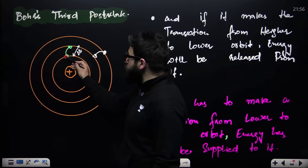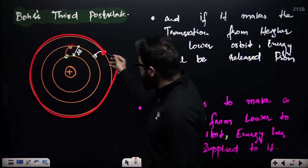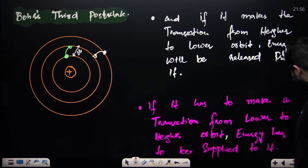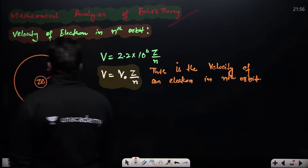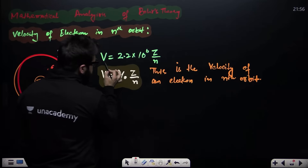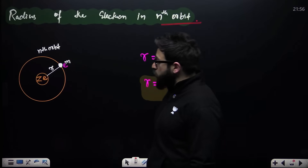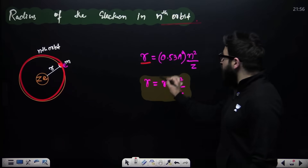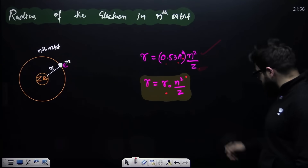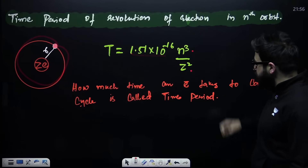Bohr's third postulate: if an electron transitions from a lower orbit to a higher orbit, energy must be supplied; if it transitions from higher to lower orbit, energy is released. Mathematical analysis of Bohr's theory: velocity of an electron in the nth orbit is v = 2.2×10⁶ × z/n, or v₀ × z/n. Radius in the nth orbit is r = 0.53 Å × n²/z. Time period is 1.51×10⁻¹⁶ × n³/z² seconds.